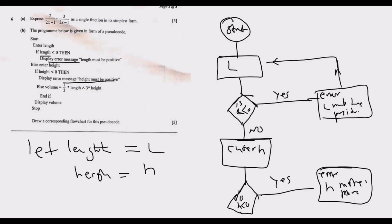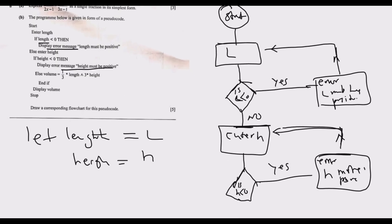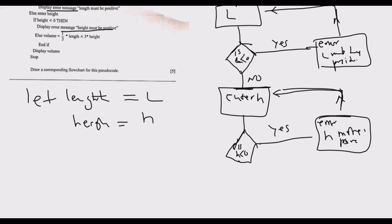Once you do that, what it implies is we need to enter the correct value of H. You go back and enter the correct value of H before you proceed to calculation. But if it was no, meaning if it was no, it's greater. Then we proceed. At this point, if it's no here and no here, meaning both H and L are greater than zero, then proceed to calculating the volume.